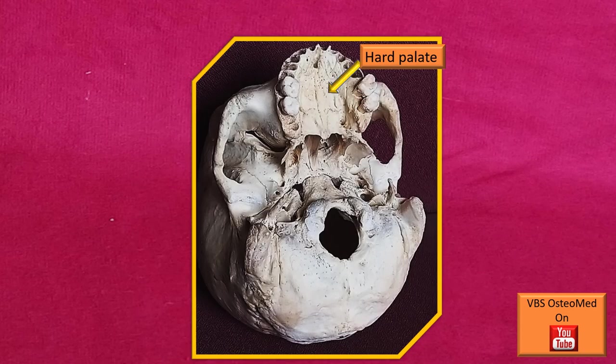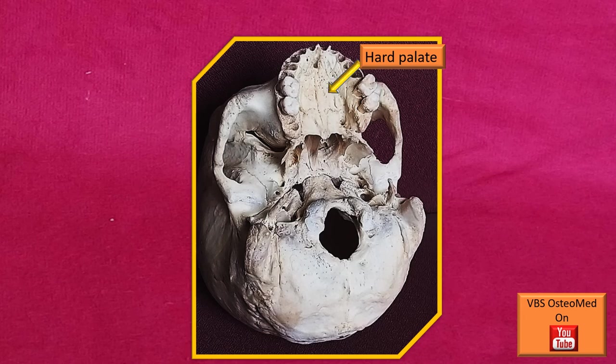This is Norma basalis. I have put this view deliberately because it brings a completion to the discussion. The maxilla forms the major contribution to the hard palate. There is a small contribution from the palatine bone a little behind that — we will see it in a more detailed discussion later.